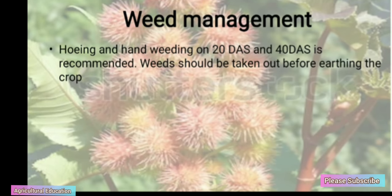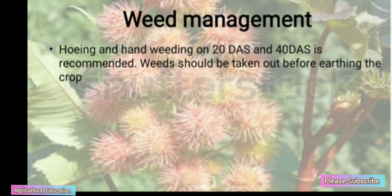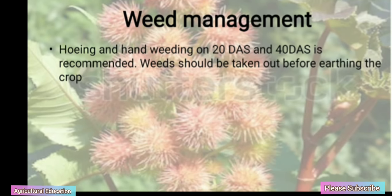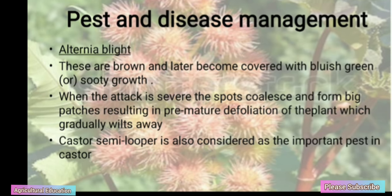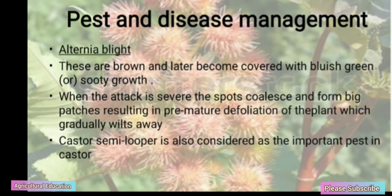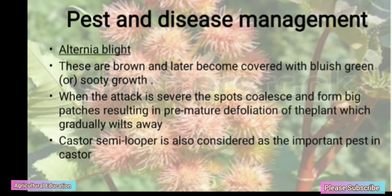Weed Management: Weeding and hand weeding at 20 days after sowing and 40 days after sowing is recommended. Weeds should be removed before earthing up the crop. Pest and Disease Management: Infected areas are brown and later become covered with bluish-green sooty growth. Castor semilooper is also considered an important pest in castor.